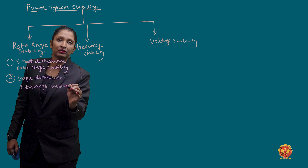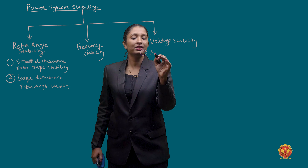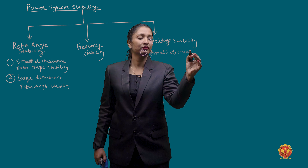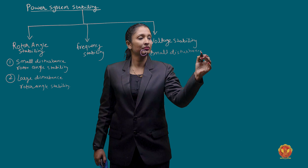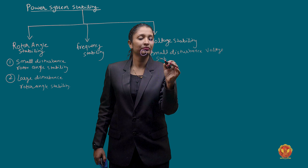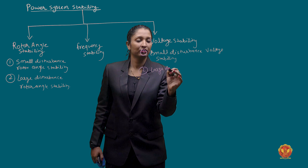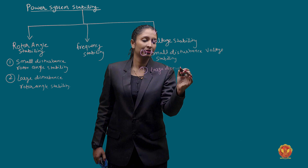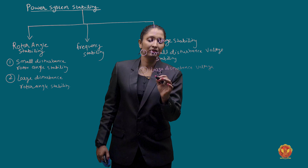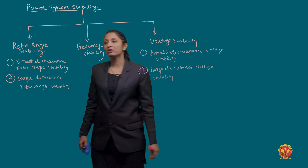You can classify the voltage stability in this way. The first is the small disturbance voltage stability. The second is the large disturbance voltage stability.